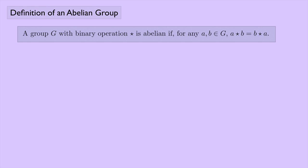I want to define something known as an abelian group. A group G with a binary operation star is abelian if for any elements A and B that are in the group G, A star B equals B star A. That's just the commutative law — this is saying that the binary operation star is commutative.